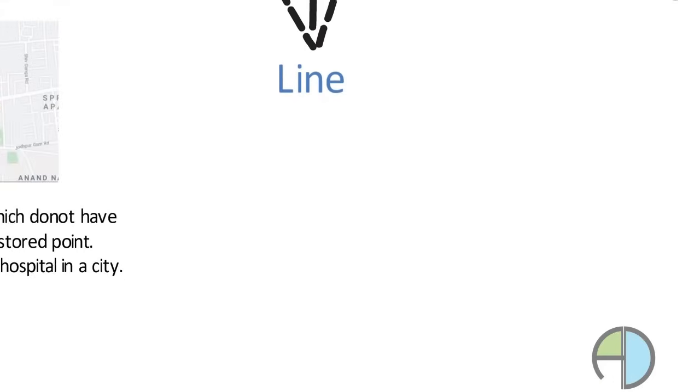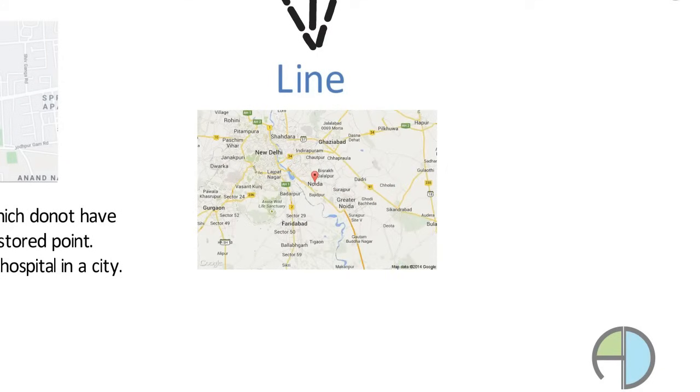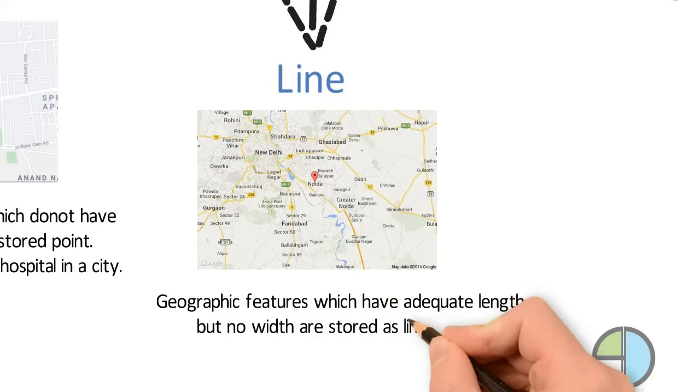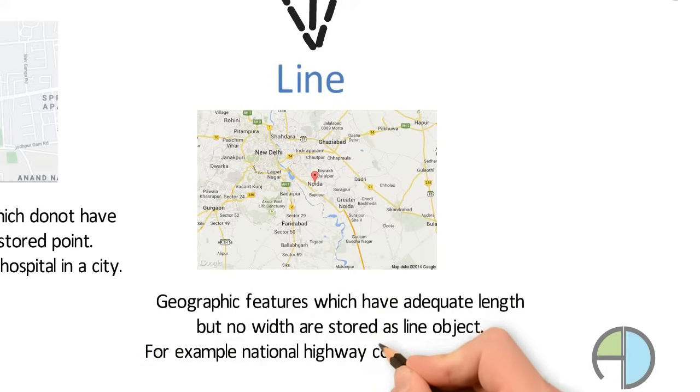Line. Any object which is having sufficient length but no width is stored as a line. For example, a state highway running across the cities.